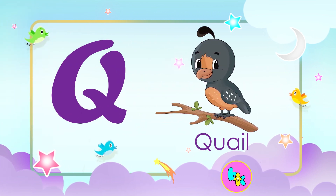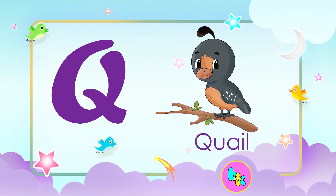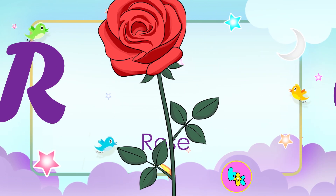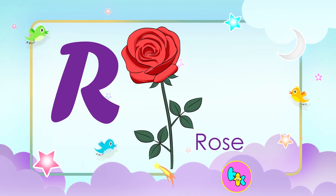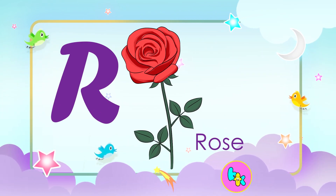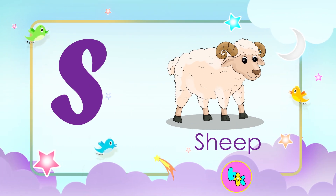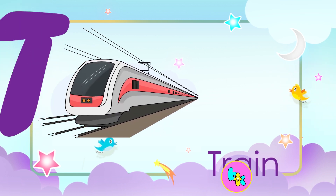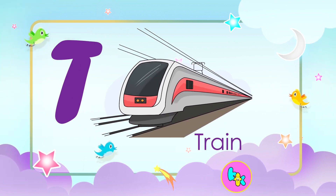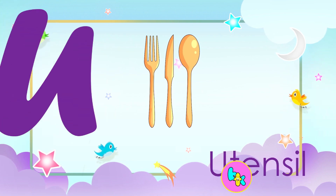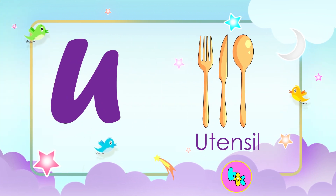Q for Quail. R for Rose. S for Sheep. T for Train. U for Utensil.